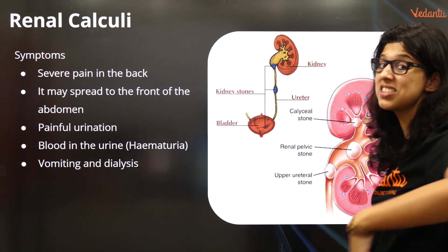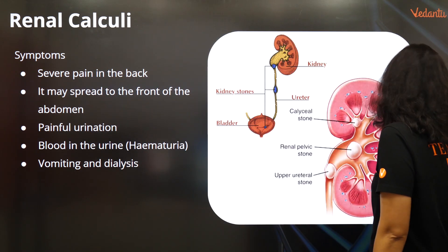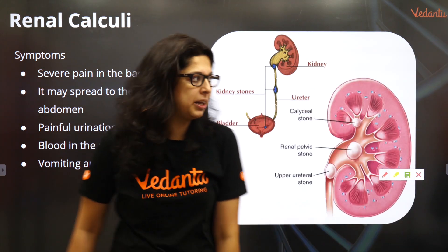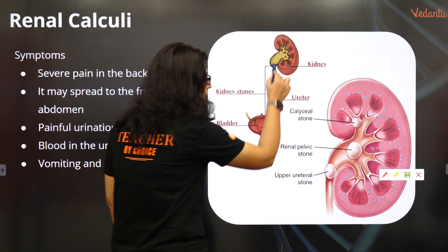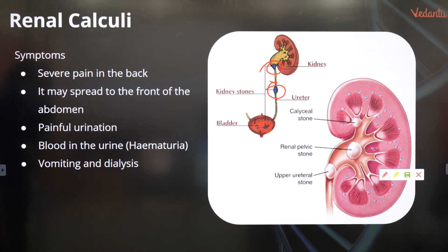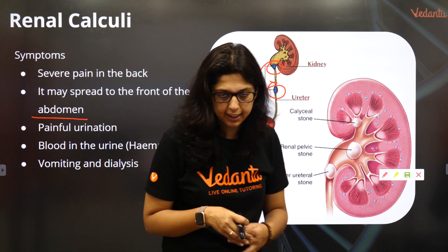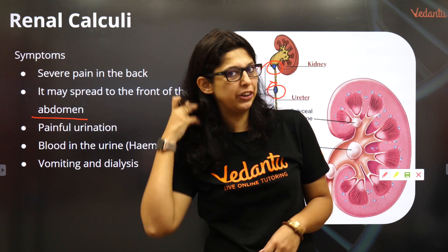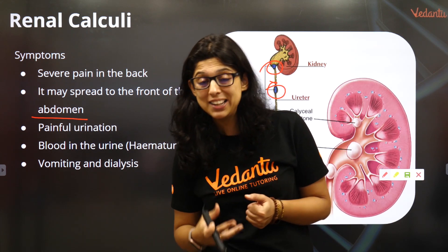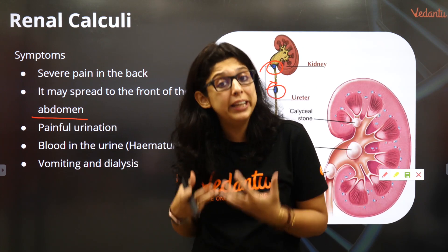What are the symptoms? There is severe, excruciating pain that can be felt in any of the following places. Urine output will be reduced. The pain is so severe that it radiates to the abdomen and the backbone. It might injure the ureter, the urinary bladder, the pelvis, or the calyx.